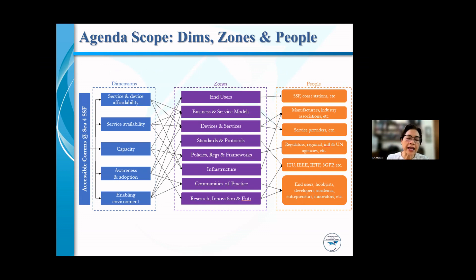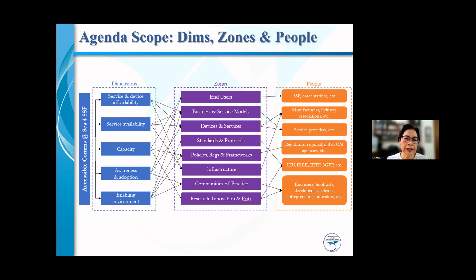The agenda, just like all other components of the Smart Seas project, looks at various dimensions: service and device affordability, service availability, capacity, awareness and adoption, and of course the enabling environment. We look at different zones of intervention — for example, business and service models, devices and services, standards and protocols, policies, regulations and frameworks, infrastructure, communities of practice, research, innovation, and entrepreneurship. We take account of the community of all agents and agencies who can both contribute to and benefit from this holistic strategy to address connectivity.